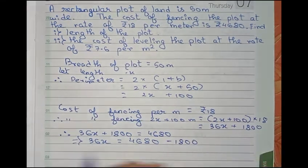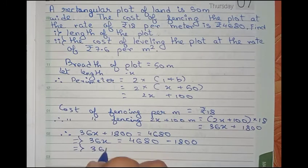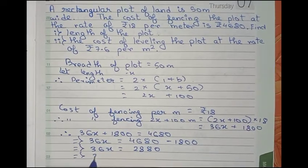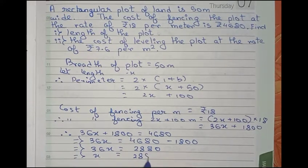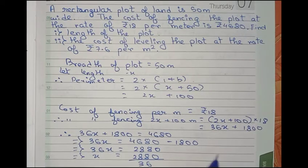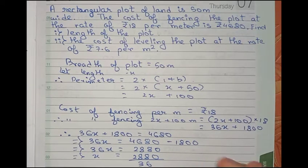Therefore, 36x equals 4680 minus 1800, taking 1800 to the right side, so the sign changes. It will become 36x equals 2880. Now x equals 2880 divided by 36.